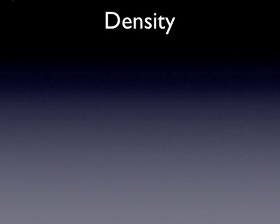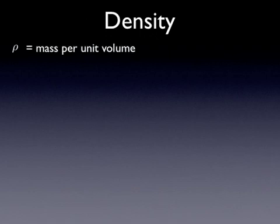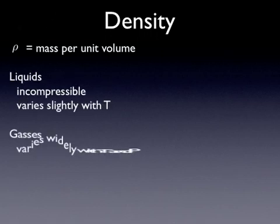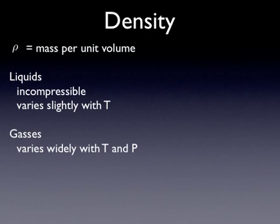The first property of fluids we're going to talk about is density. We'll use the Greek letter rho to describe density throughout this class. As you've learned from physics, it's mass per unit volume of a fluid. For liquids, density is fairly constant — we consider them incompressible — although it does vary slightly with temperature. For gases, density varies widely depending on temperature and pressure, and we actually have to use the ideal gas law to determine density of gases, which we'll discuss in a later lecture.